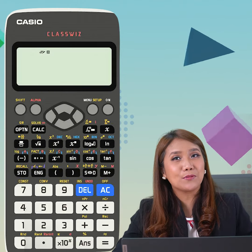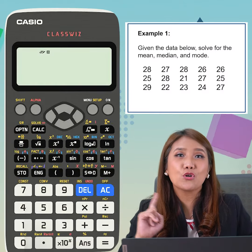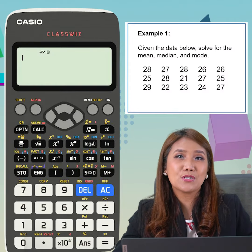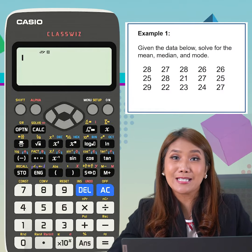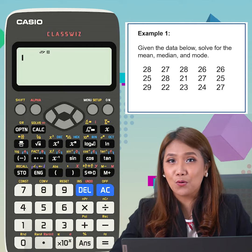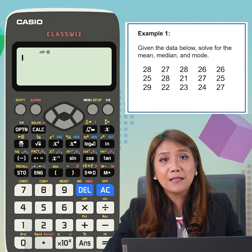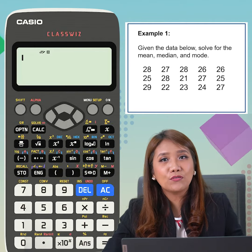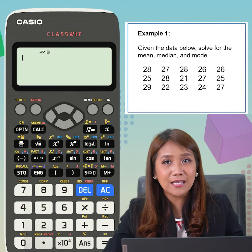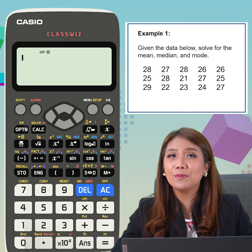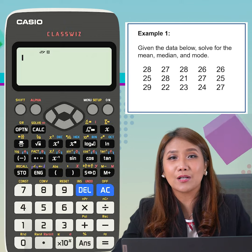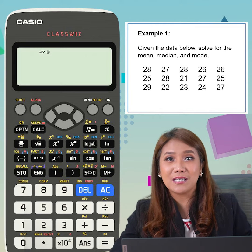For our first example, the data shows the grades of the students in their statistics performance tasks. Find the mean and median of the given set of data. So how do we do that using our Casio Classwiz?